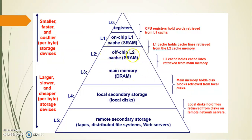Level 3 is main memory, manufactured using DRAM — Dynamic RAM. Both SRAM and DRAM are volatile memory. Level 4 is local secondary storage, which stores the operating system and other data. Level 5 is remote secondary storage — devices not directly and always connected to the computer, such as pen drives, tapes, distributed file systems, and web servers.